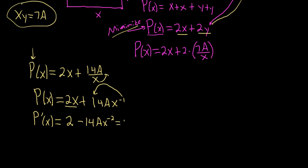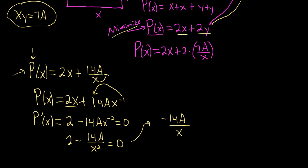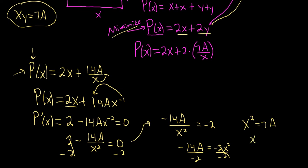Set the derivative equal to zero: 2 minus 14a over x squared equals 0. The derivative is undefined at x = 0, but that's not valid for a rectangle. Solving: negative 14a over x squared equals negative 2, multiply by x squared, divide by negative 2, giving x squared equals 7a. Taking the square root: x equals plus or minus square root of 7a. Since it's a length, x equals square root of 7a — this is our critical number.